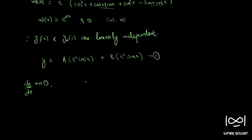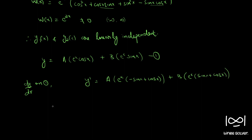Differentiating equation 1, we get y' = A·e^x·(cos(x) − sin(x)) + B·e^x·(sin(x) + cos(x)). Expanding this: y' = A·e^x·cos(x) + B·e^x·sin(x) − A·e^x·sin(x) + B·e^x·cos(x).